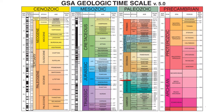Earth began about 4.6 billion years ago. The earliest fossil evidence for life is about 3.7 billion years ago, and most people agree life probably emerged around 4.0 billion years ago, with some estimates pushing as far back as 4.2 to 4.3 billion years ago. Back then the Earth was very different. The first life to evolve were prokaryotes — bacteria and archaea — and eukaryotes evolved much later.